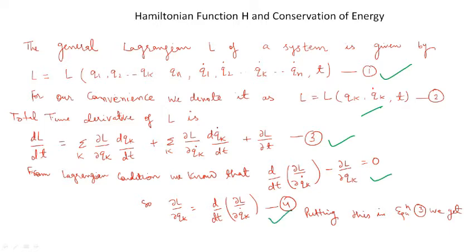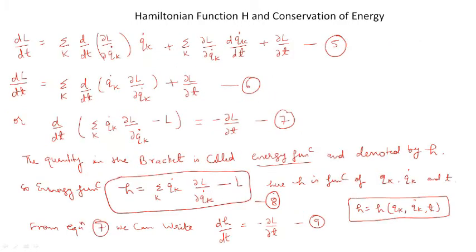Now we will substitute equation 4 into equation 3. Then we see that dL/dT = Σk (d/dT)(∂L/∂Qk-dot)(dQk/dT) + Σk (∂L/∂Qk-dot)(dQk-dot/dT) + ∂L/∂T. Let us call this equation 5.